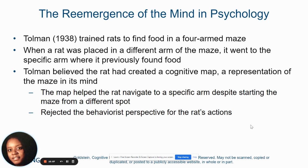After 1938, research started to move back into the field of cognition, starting with Tolman, who trained rats in a maze. The rats were placed in different parts of the maze to find food. Tolman said these rats aren't just learning — they're creating a cognitive map in their minds so they know where to go. When he closed off a path and started the rats from a different point, they found an alternate route to the food. This caused a rejection of the behaviorist perspective and the reemergence of cognition.